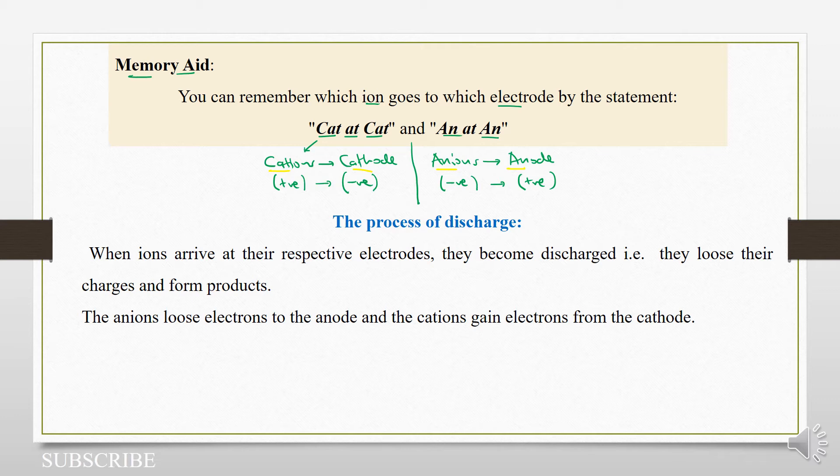So the process of discharge. What happens when these ions go to the corresponding electrodes? They will have to be discharged. So the process of discharge: when ions arrive at their respective electrodes, they become discharged.